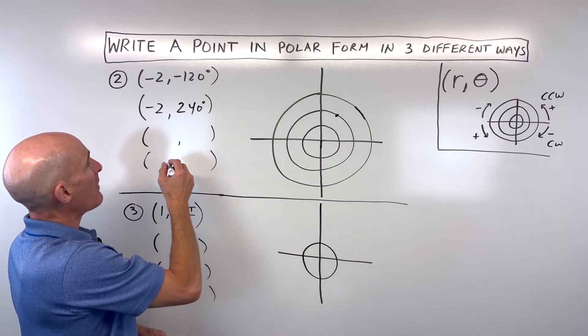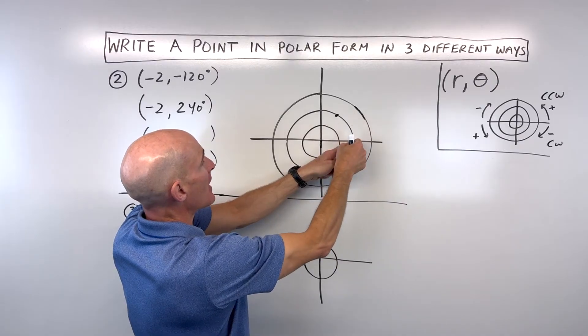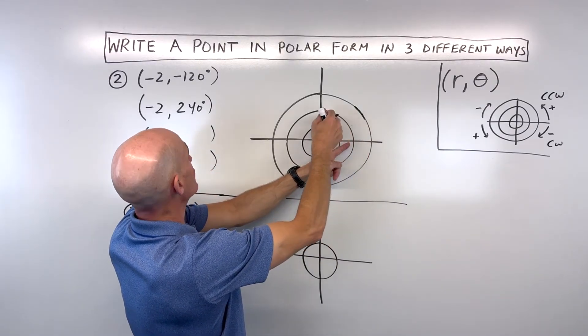Now let's do a positive r value. If we go to the right two, one, two, I could rotate counterclockwise 60 degrees. That's a positive angle, remember, counterclockwise.